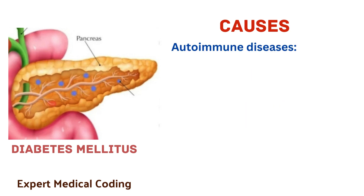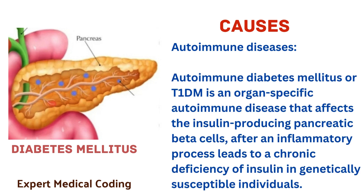The second cause is autoimmune disease. Diabetes mellitus or type 1 diabetes mellitus is an organ-specific autoimmune disease that affects the insulin-producing pancreatic beta cells, after an inflammatory process leads to a chronic deficiency of insulin in genetically susceptible individuals.